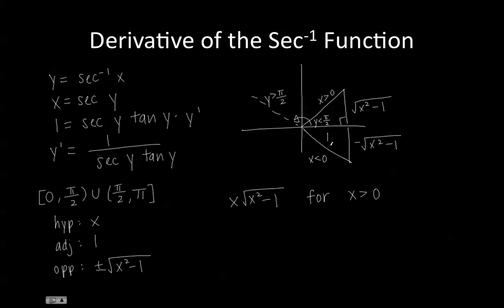Now if x were less than 0, our secant y would still be x, except our tan y would be negative square root of x squared minus 1. Notice how these two expressions will give you the same value.